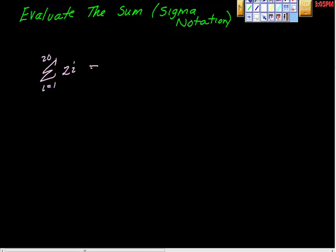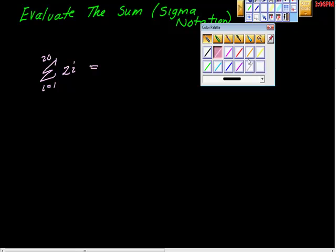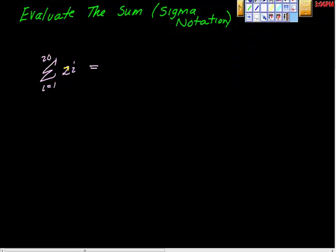So here's an alternative way to do this. We'll pull this 2 out. We'll take 2 times the summation of i as i goes from 1 to 20, right?